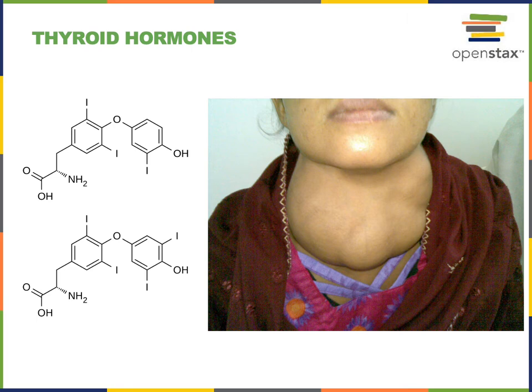The chemical structure of the thyroid hormones shows T3 on the top. T3 stands for triiodothyronine, because the chemical structure of T3 contains three iodine atoms. T4, also known as thyroxin, contains four iodine atoms in its chemical structure. Because the thyroid hormones contain iodine, dietary iodine deficiency impairs the synthesis of thyroid hormones. This can lead to a goiter, an overgrowth of the thyroid gland, as shown in the picture.